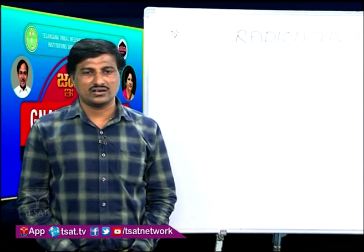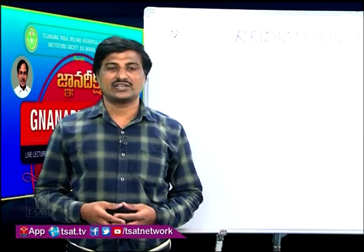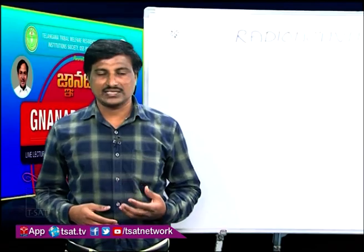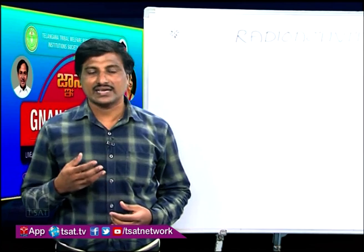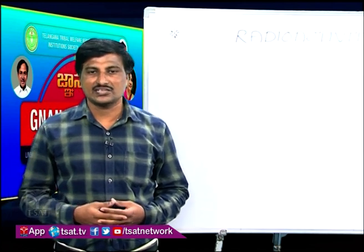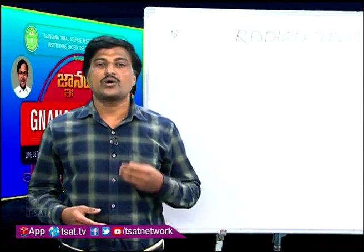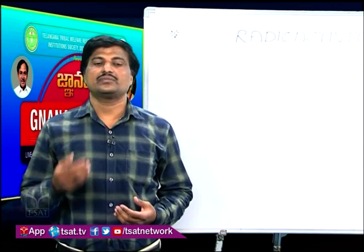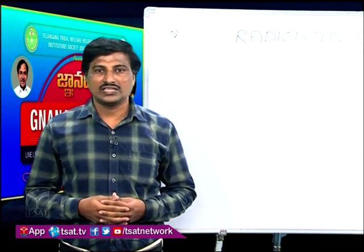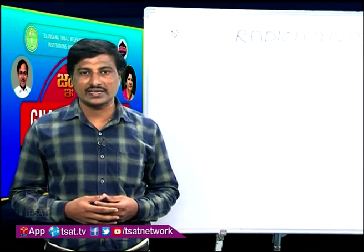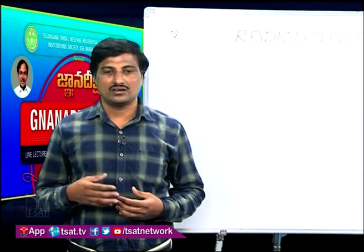There are broadly two types of radioactivity. The first one is natural radioactivity, and the second one is artificial radioactivity. Natural radioactivity is the spontaneous emission of radiation from heavy elements occurring in nature. Artificial radioactivity refers to spontaneous emission of radiation from heavy elements heavier than those occurring in nature, and they are produced using modern techniques like artificial transmutation of an element.